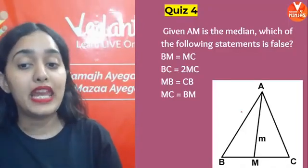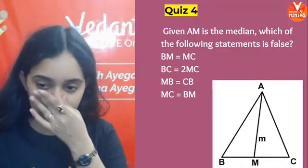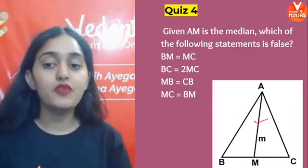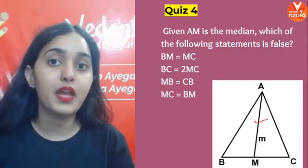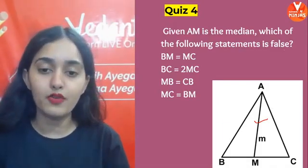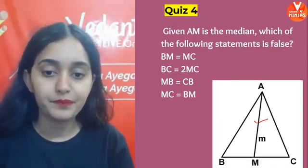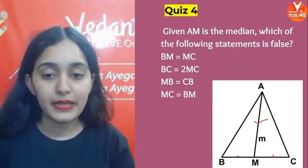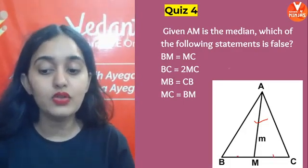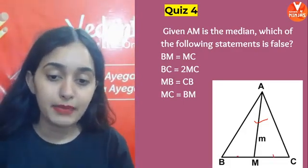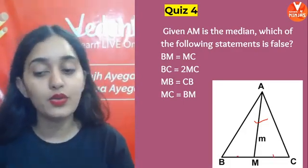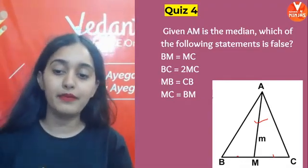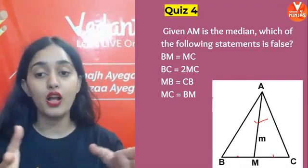Next question: Given AM is the median, which of the following statements is false? Options: A) BM equals MC; B) BC equals 2 times MC; C) MD equals CB; D) MC equals BM. Which one is false? Think carefully — you have 30 seconds.